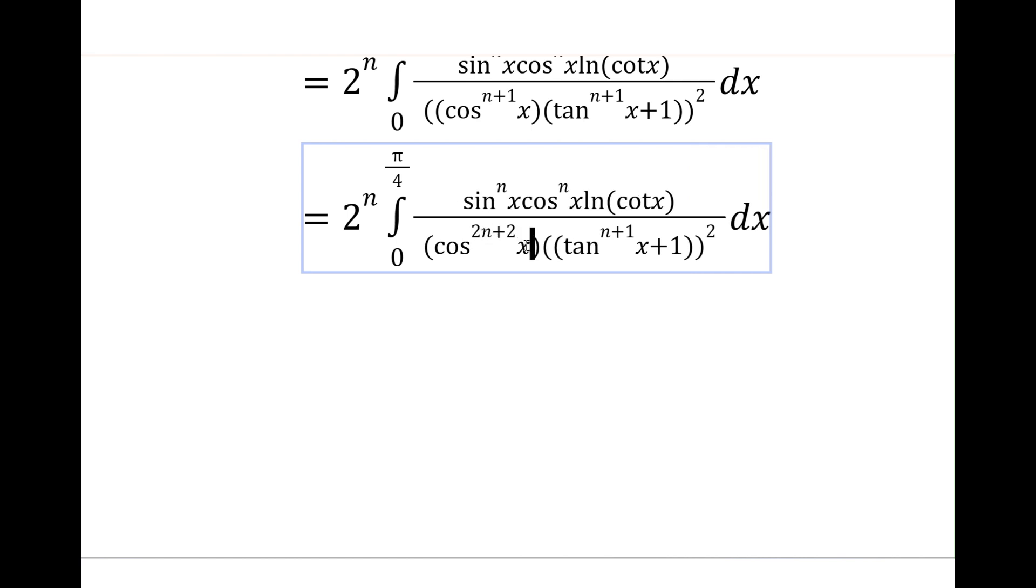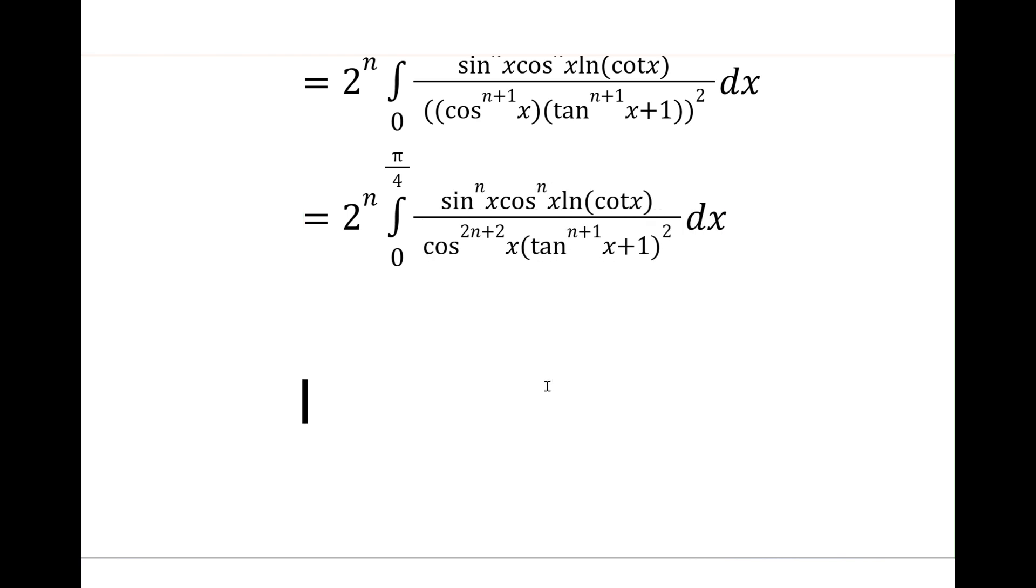Now we can do some cancellation at the top since we have cos to the n, and when we take that down that will just be cos to the n plus 2 on the bottom. Then cos to the n plus 2 is cos to the n times cos squared. So we have a cos squared in the denominator but that's the same as having a sec squared on the numerator. And then this sin to the n over cos to the n, we can just write this as just tan to the n.